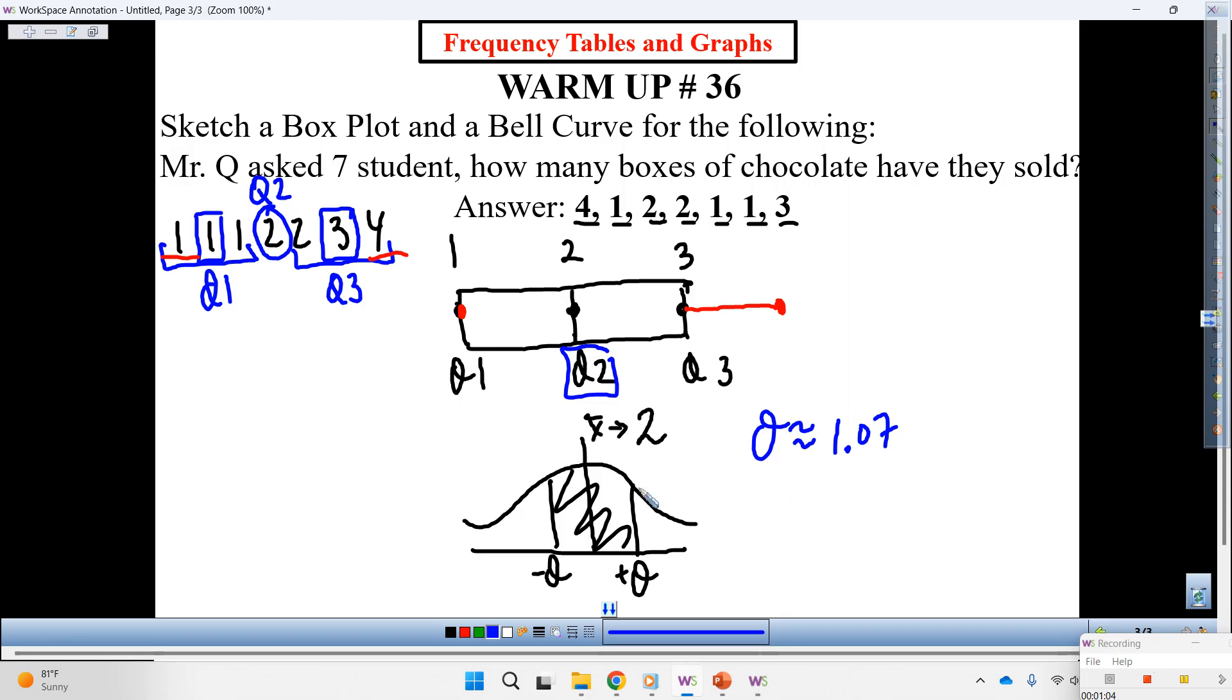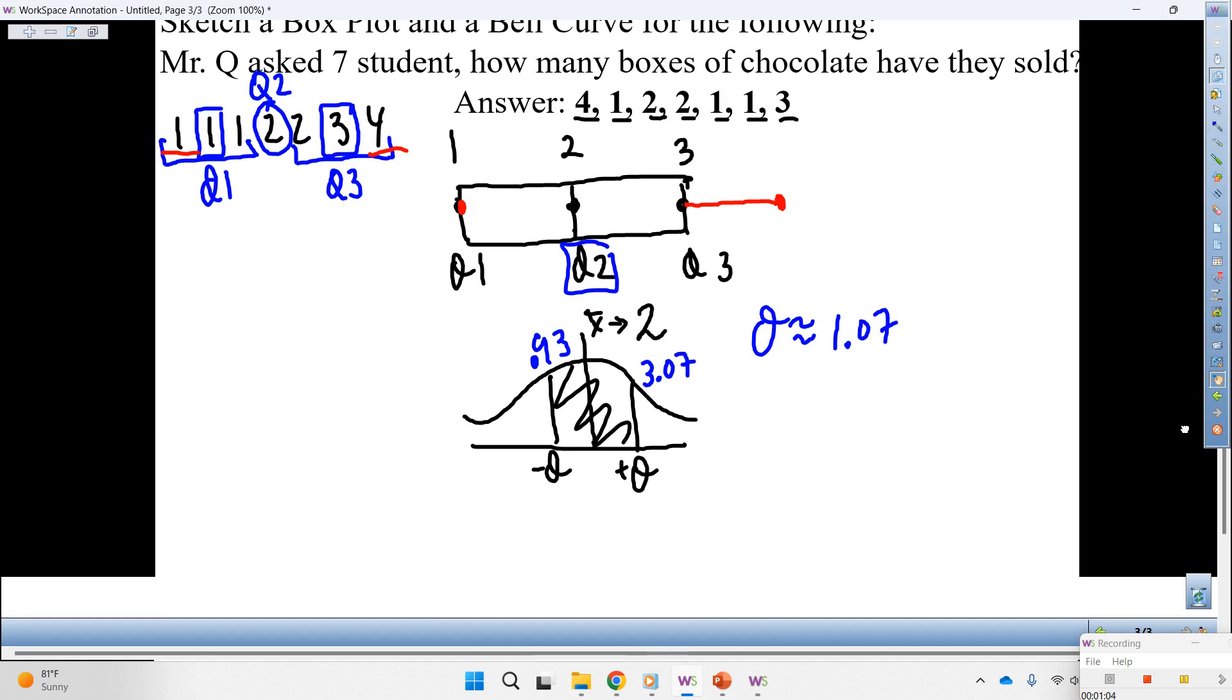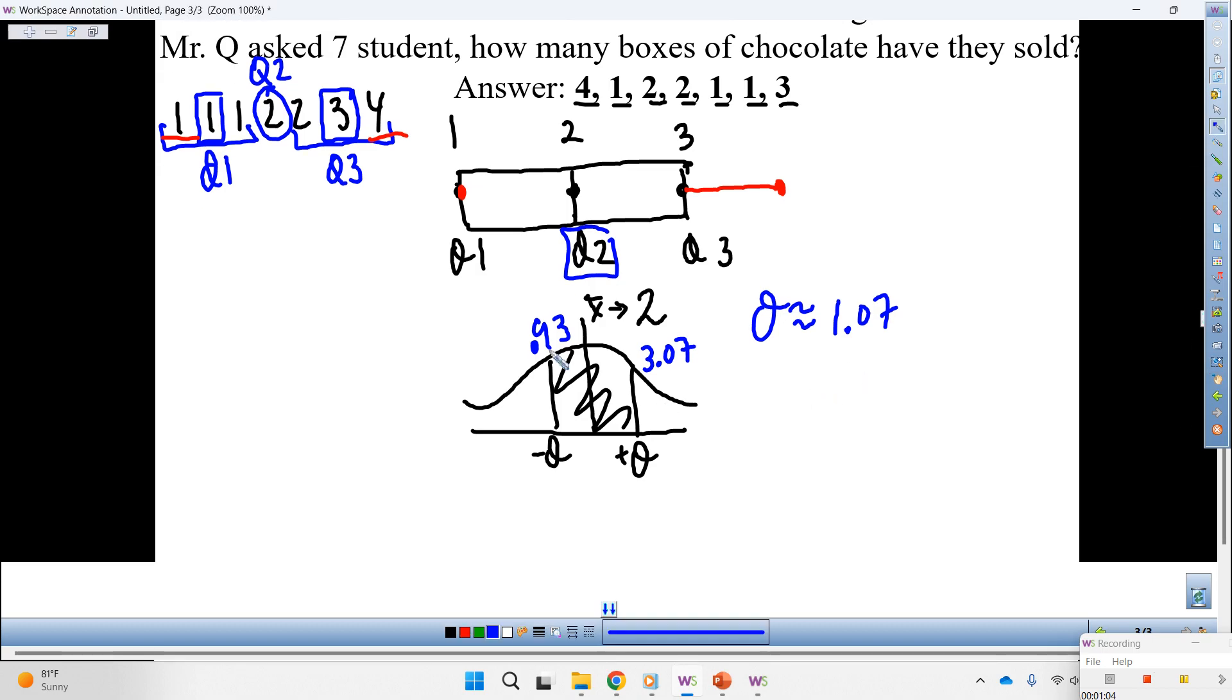Hands, have you got 1.07? Yep. So that means we are one standard deviation up is 3.07, one standard deviation down we are at .93.